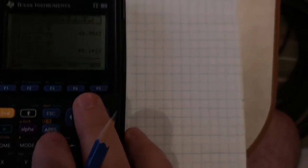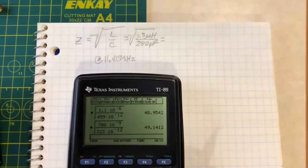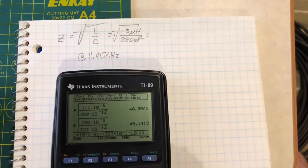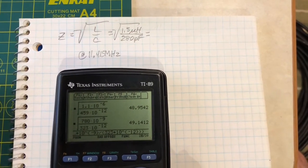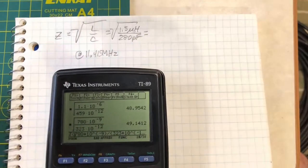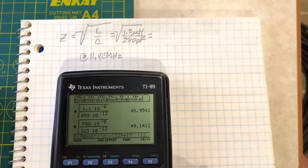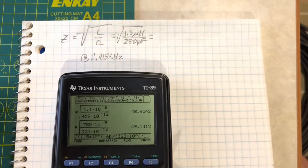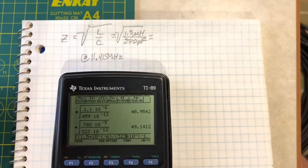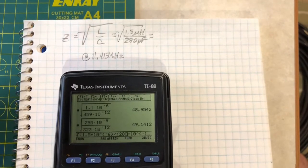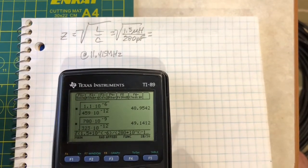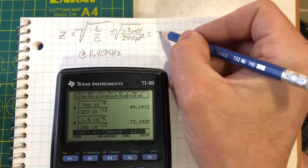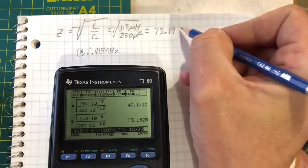Now we're going to do the math. If we pull our formula down and plug in those values, we have 1.5 microhenries (times 10 to the negative 6) and our capacitance was 280 picofarads (which is 10 to the negative 12). We get a characteristic impedance of 73.193 ohms.